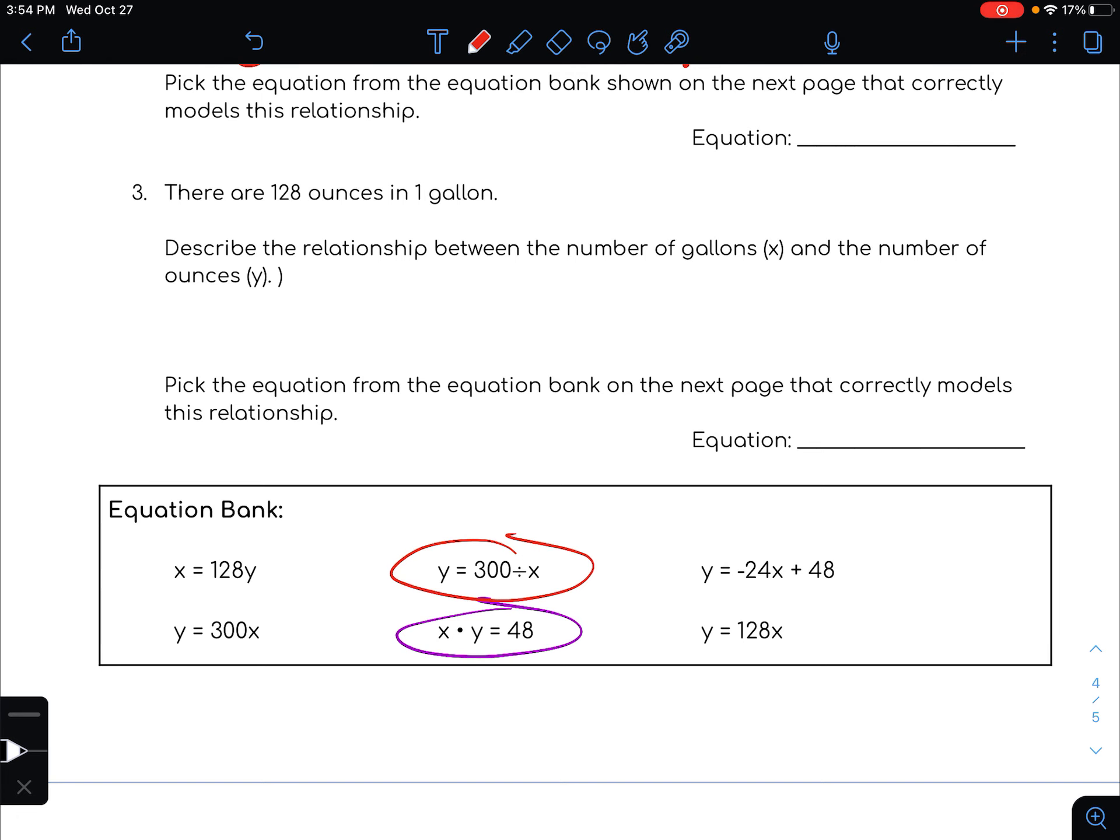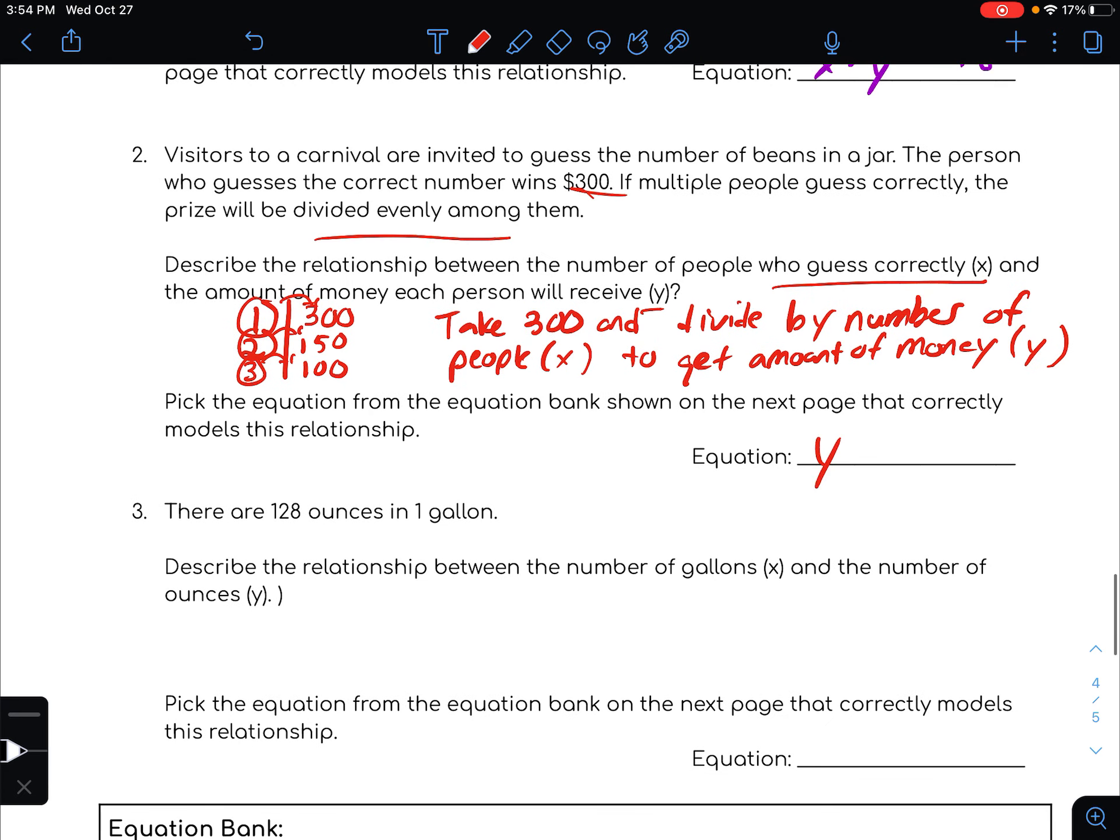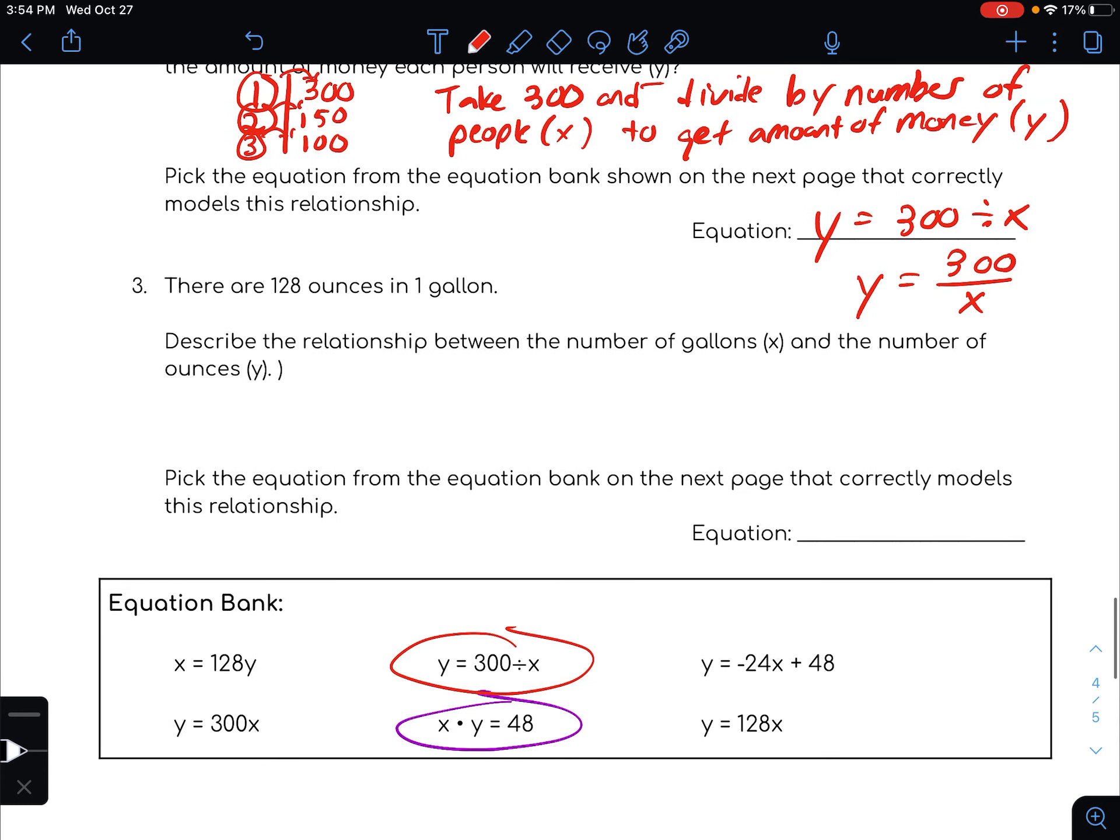Like that is that equation, so y equals 300 divided by x. This is probably how I would write it, 300 divided by x like this, but you could use that divide sign as well.